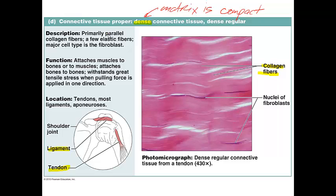What's important to remember about dense regular connective tissue is that the collagen fibers are very parallel. Ligaments and tendons attach muscles to bones or to other muscles. We find this tissue in tendons, ligaments, and also flattened tendons called aponeuroses. The collagen fibers have a slightly wavy appearance. Tendons attach muscles to bones, while ligaments attach bones to other bones — a distinction we'll discuss more in subsequent chapters.